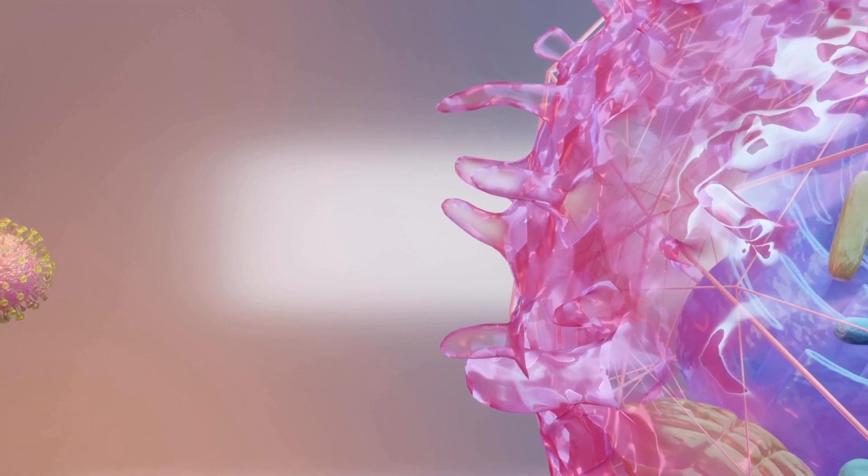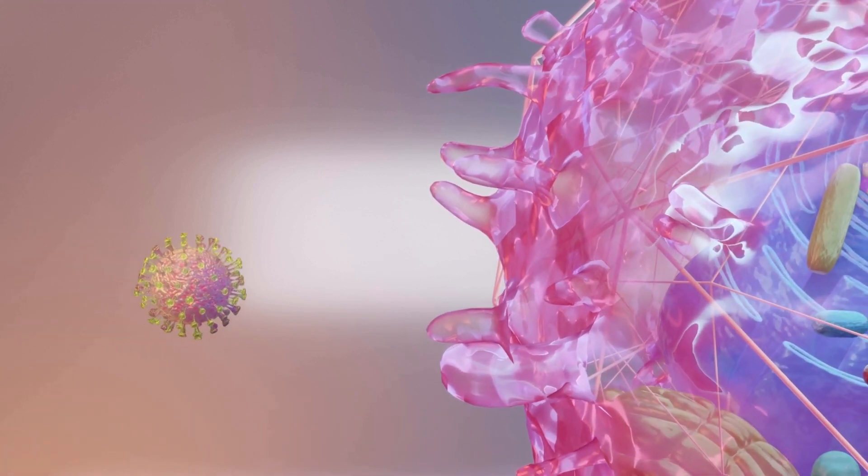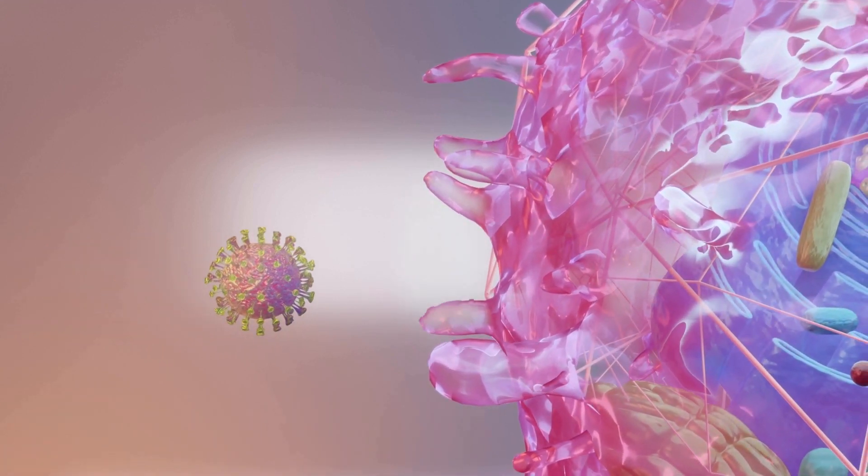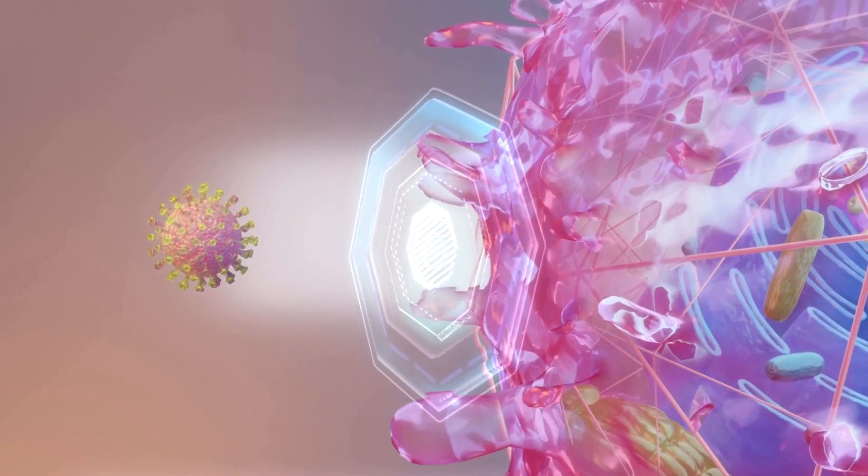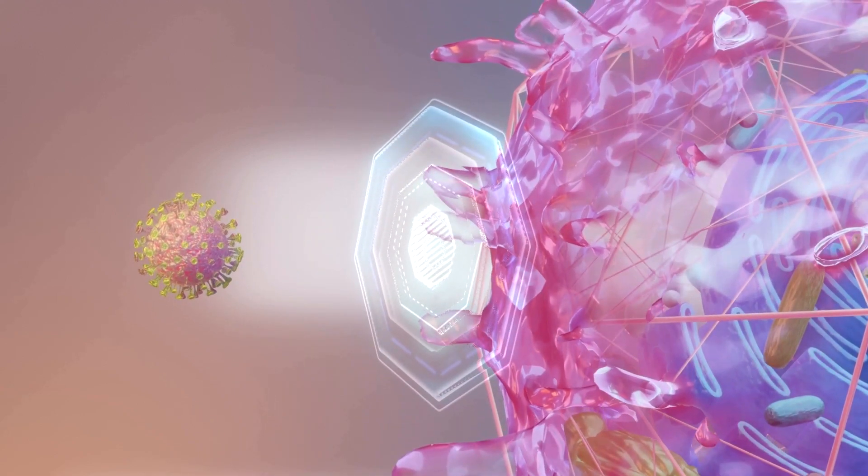The virus uses the spike protein's UP-RBD to bind with the ACE2 structure, which enables the virus to enter and infect the cell. According to the researchers, their discovery may help in developing a cure or vaccine that prevents infection by targeting ACE2.